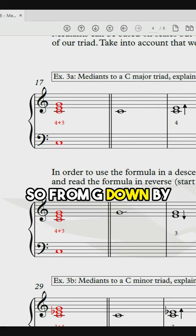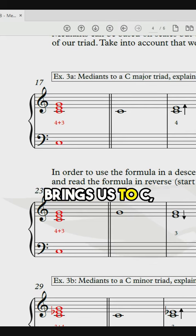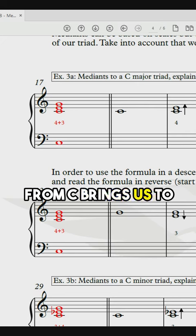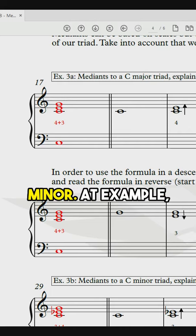So from G down by 3 brings us to E. 4 down from E brings us to C. Then 3 down from C brings us to A. And that is your second median structure, an A minor.